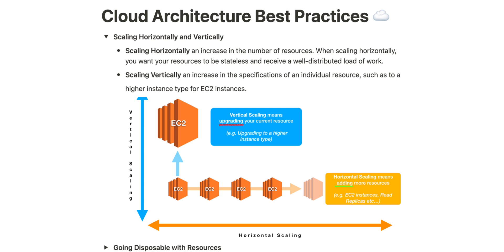Horizontal scaling is like inviting more friends to your party when it gets crowded. Each friend — or resource in cloud terms — works on a piece of the puzzle, making things faster and more efficient. Remember, these resources should be stateless, which means they don't store important data. They are like friendly, shareable helpers.